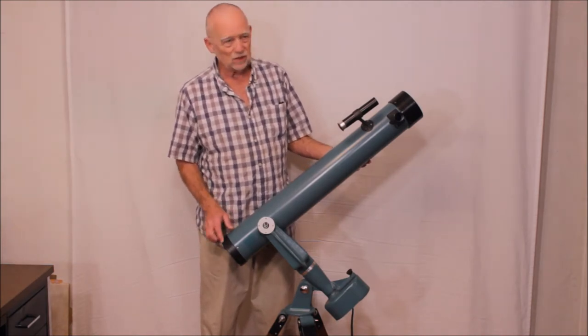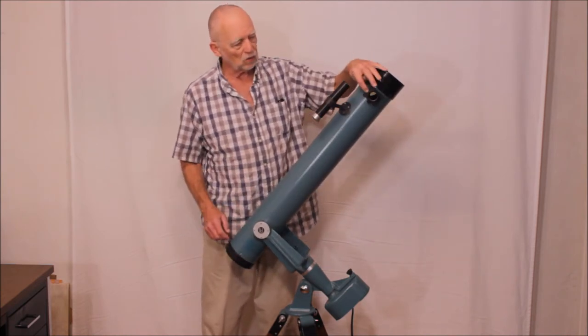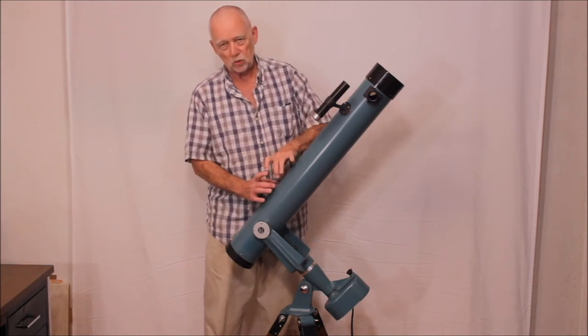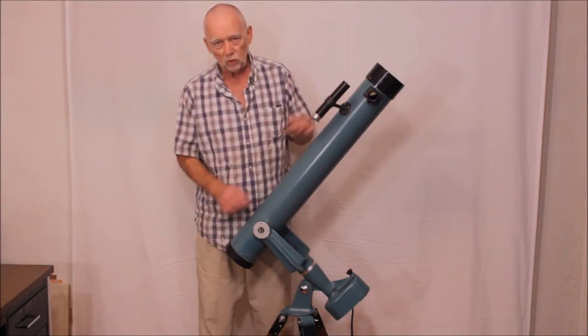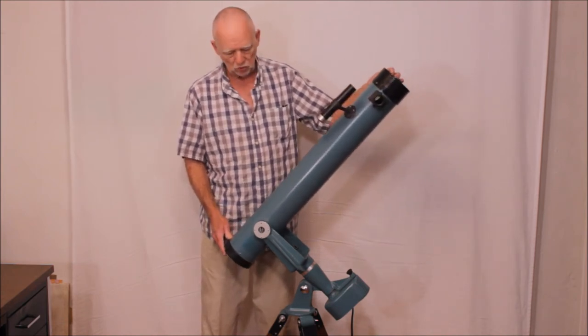This is a slightly different telescope though. This is a Newtonian reflector and it has a focuser way up here, instead of the Celestar 6 where the focuser was down here with a folded light path. This is a fairly standard Newtonian reflector.